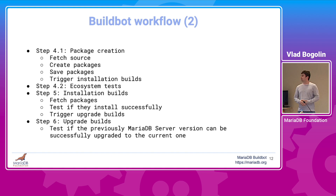In the fourth step we have two types of builds that may run in parallel: package creation, where we fetch the source, create the packages, save them, and trigger installation builds; and ecosystem tests, where we fetch the latest version of each tested framework, configure it to use the current MariaDB version, and run its test suite. In the fifth step, we test whether the previously created packages can be successfully installed. If installation is successful, we trigger upgrade tests to verify that the latest released version of MariaDB server can be successfully upgraded to the current development version.